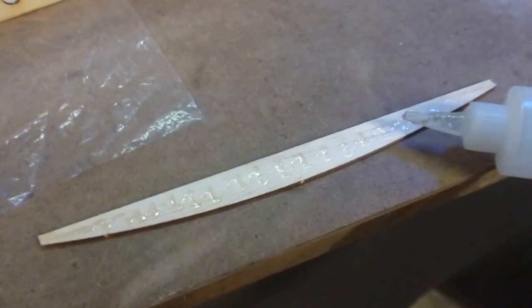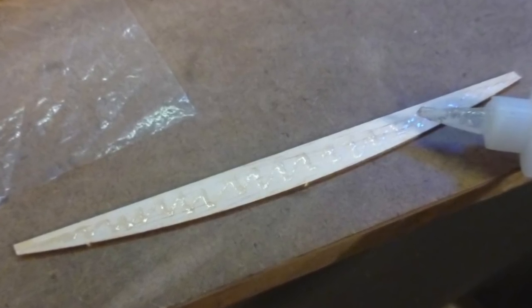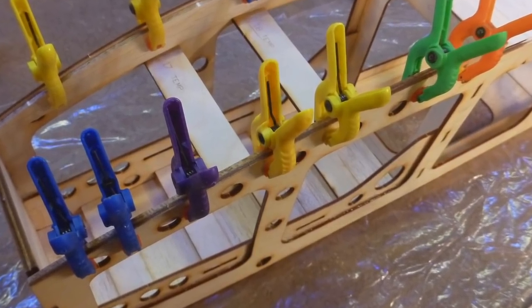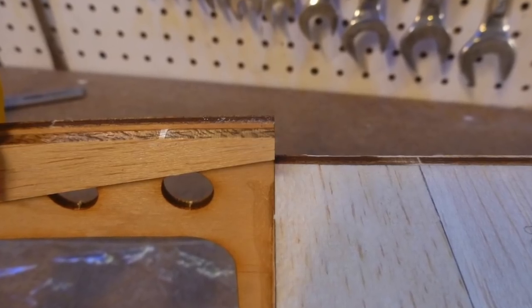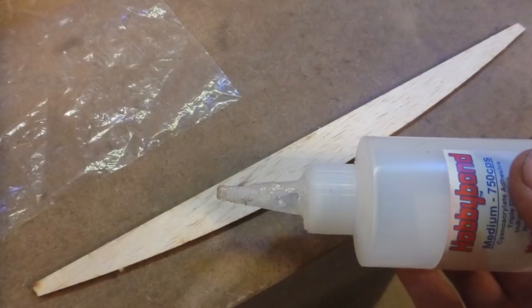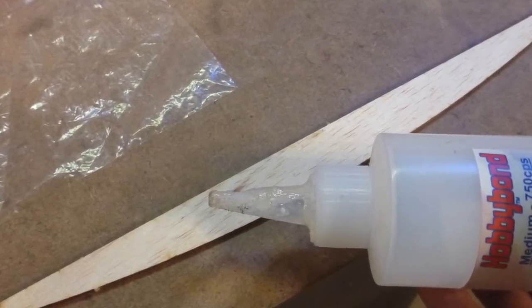Locate parts number 25, paying attention to the end marked front. Apply glue to them and clamp them into place, being careful to leave a ledge for the sheeting to be applied over them. There are two for each side, a total of four.